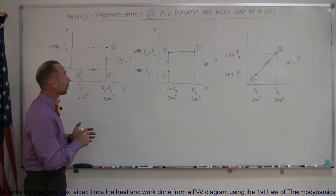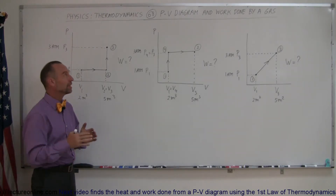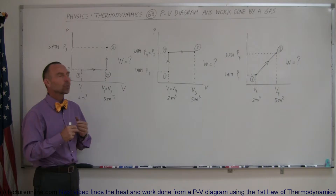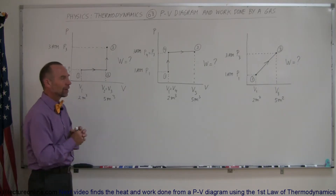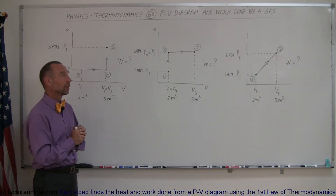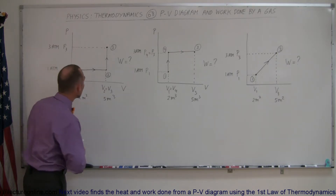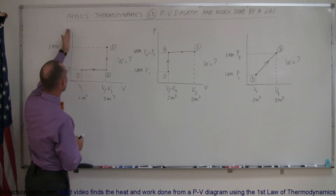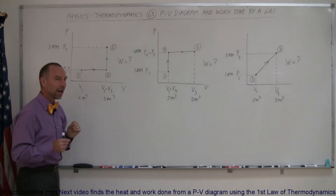In our topics of thermodynamics, we're going to talk about the PV diagram and in particular the work done by gas as illustrated on the PV diagram. A PV diagram has pressure on the vertical axis and volume on the horizontal axis.